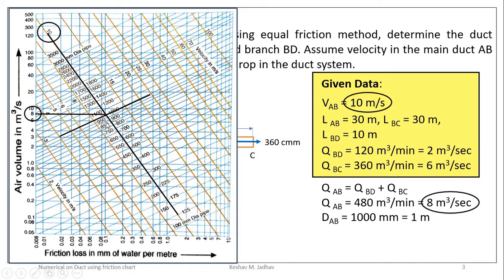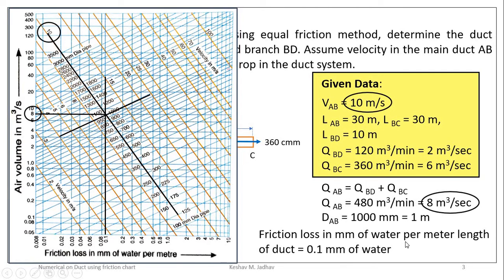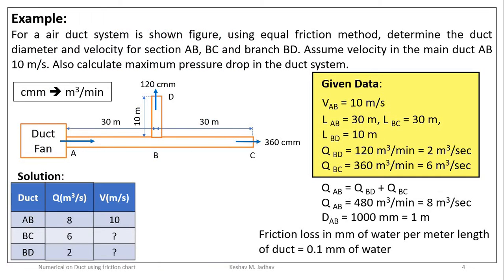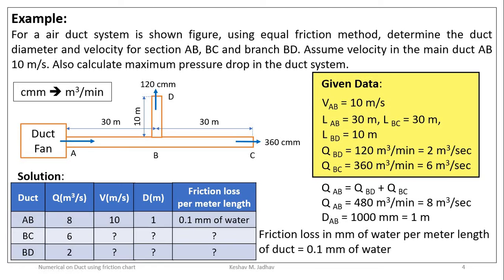Drawing a vertical line from this intersection point down to the x-axis, we can read the friction loss value as 0.1 mm of water column per meter length of duct. We now prepare a table with columns for duct section, volume flow rate in cubic meters per second, velocity in m/s, diameter, and friction loss per meter length. For section AB, diameter is 1 meter and friction loss per meter length is 0.1 mm of water column.